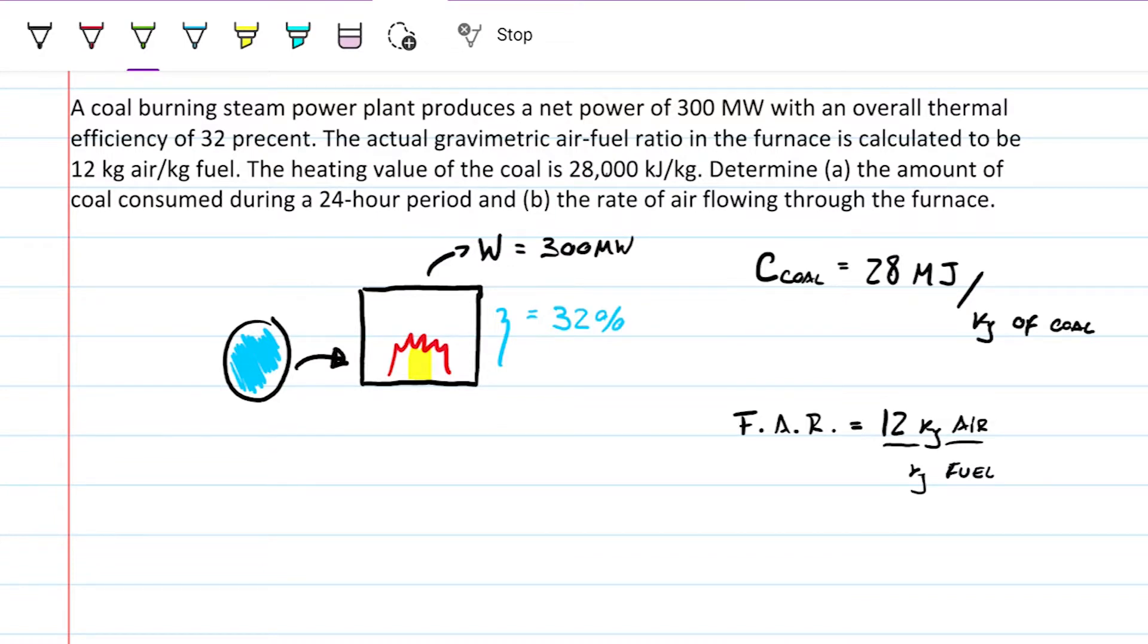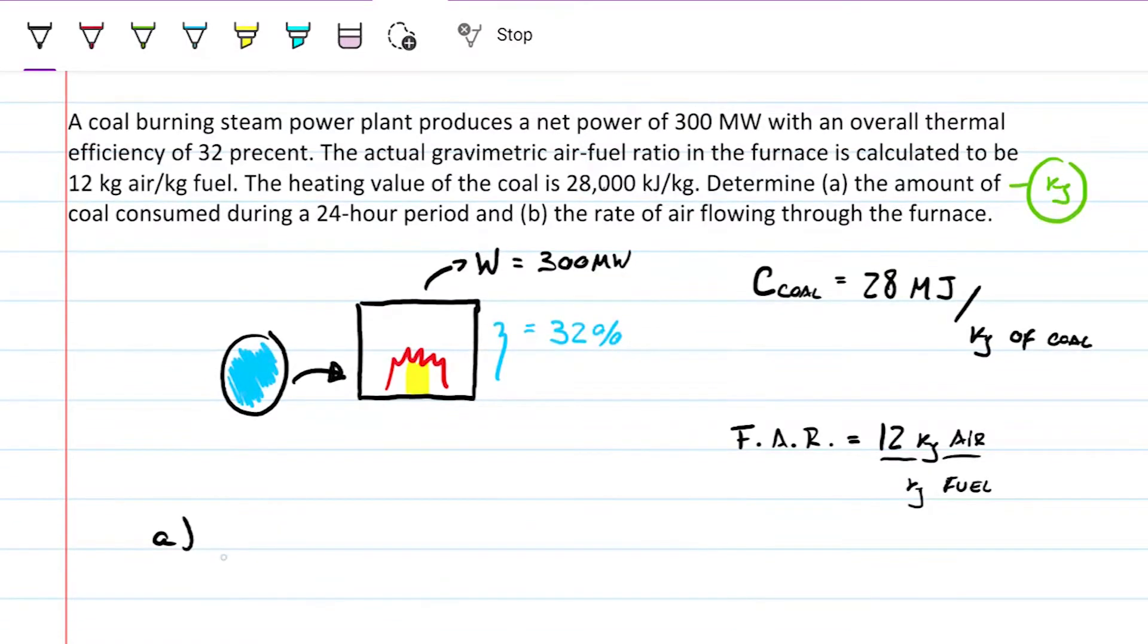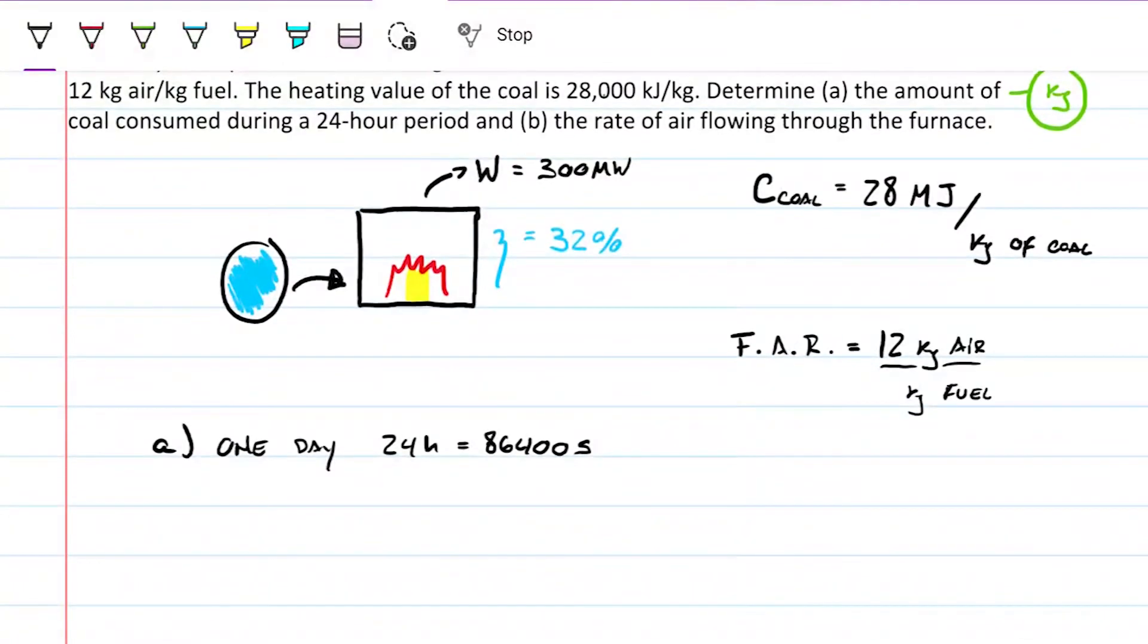What we're trying to calculate here is the amount of coal consumed. So you want an answer in mass, so kilograms or tons or something to that extent. And to be able to do that, we're going to obviously relate the total amount needed of coal and the total energy that is outputted here. So what we can start is, in one day, we have 24 hours, and that's equivalent to, so in one day, 24 hours, which is equivalent to 86,400 seconds. If you don't trust me, just multiply 24 by 60, and then times 60 again.